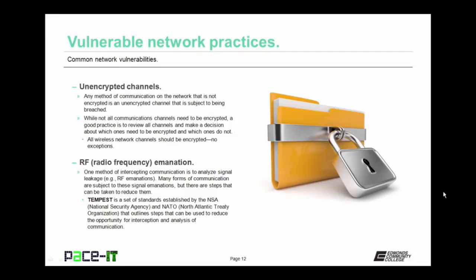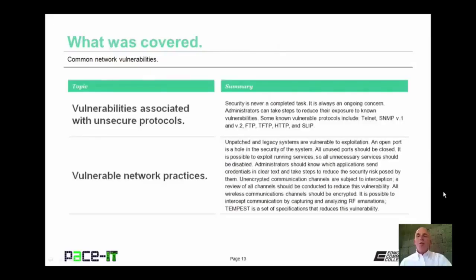A vulnerability that few network administrators think about are RF, or radio frequency, emanations. One method of intercepting communication is to analyze signal leakage — that's the RF emanation. Many forms of communication are subject to these signal emanations, but there are steps that can be taken to reduce them. Tempest is a set of standards established by the NSA and NATO that outline steps to reduce the opportunity for the interception and analysis of communication. That concludes this session on common network vulnerabilities.